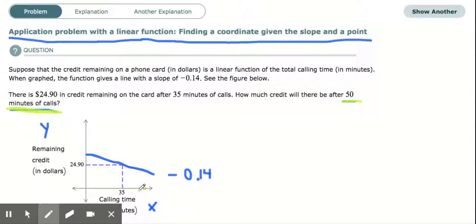So after 35 minutes it's $24.90 that's left on the card, but where would 50 be if you're looking for 50 minutes on the x-axis, right? Well it would be a little bit past 35, maybe around here.